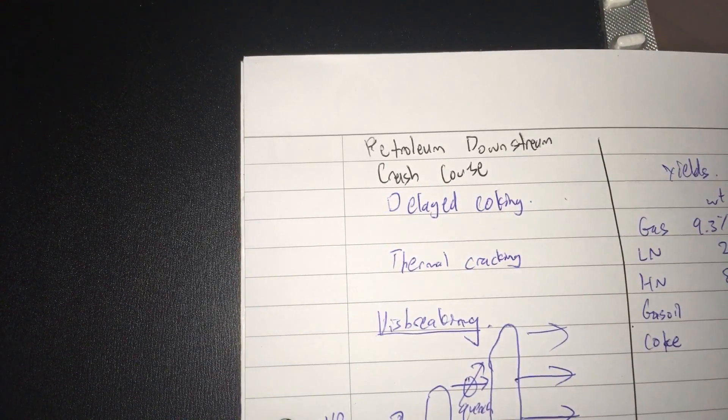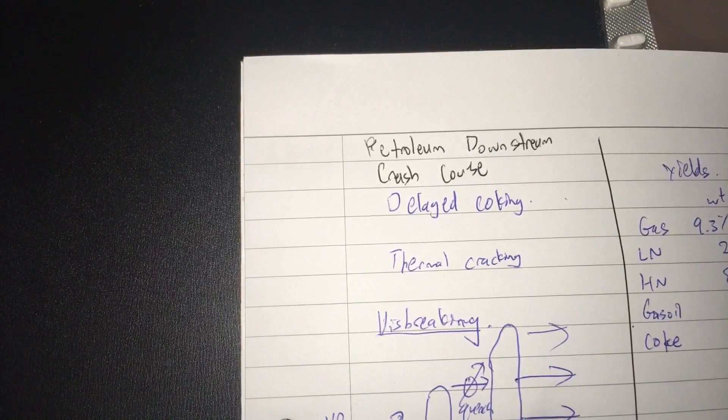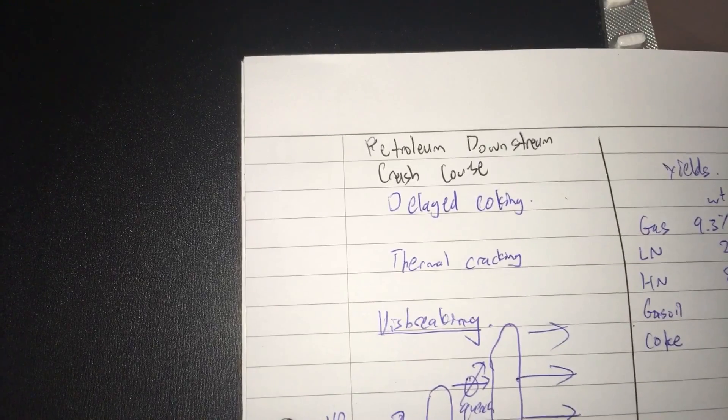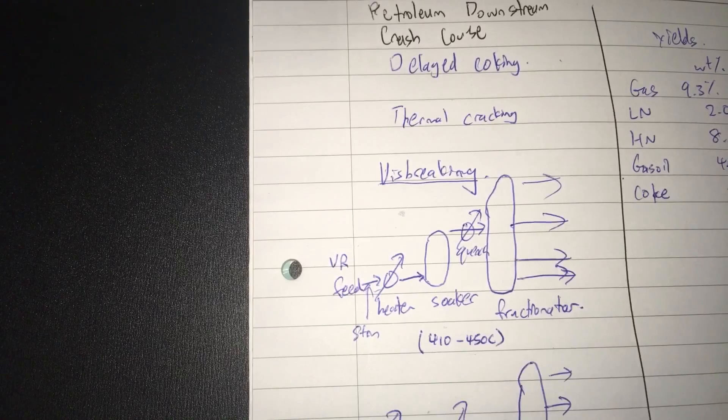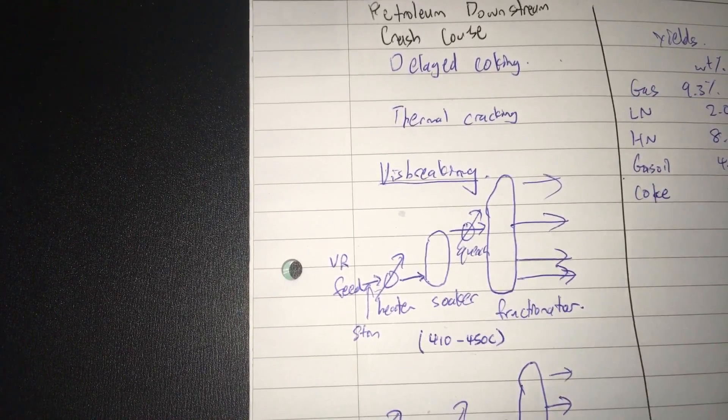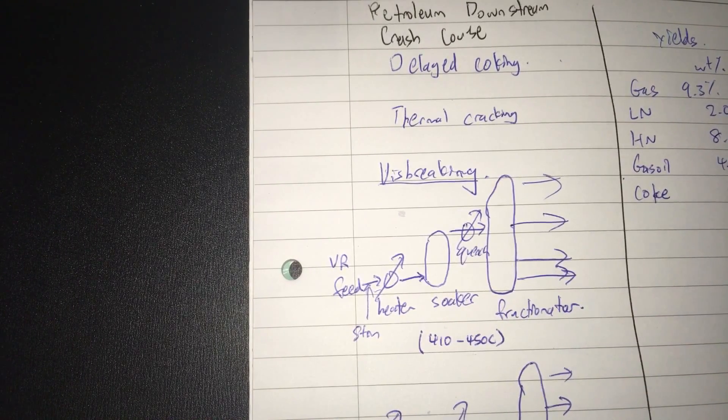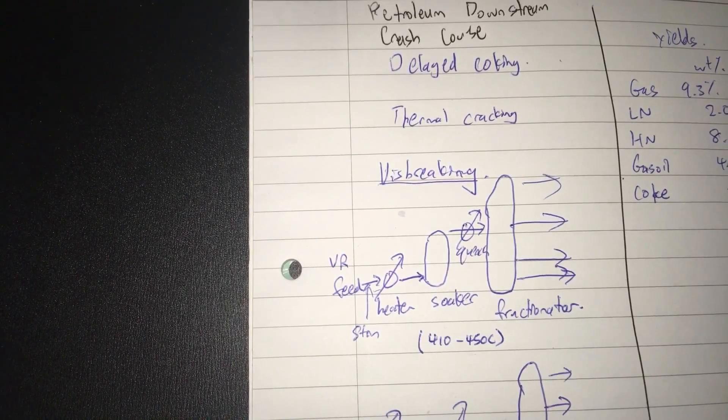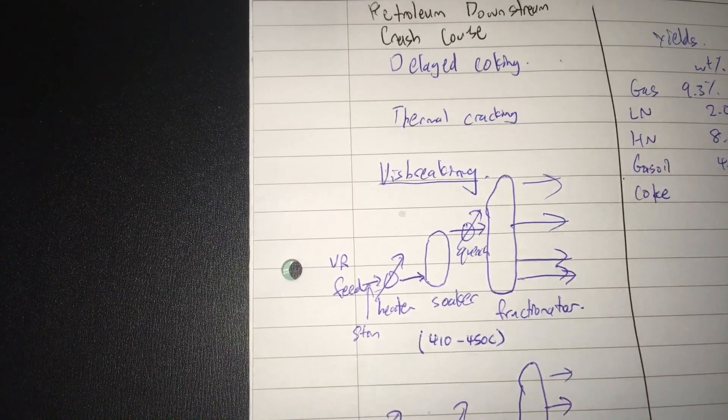Delayed coking, what is it? It is a kind of thermal cracking process. We have discussed thermal cracking processes before if you have watched my previous videos on visbreaking. Just to recap, visbreaking is to reduce the viscosity of a vacuum residue or atmospheric residue via subjecting it to a limited amount of heat so that less gas oil or kerosene or those valuable oils are needed to dilute the vacuum residue to make it acceptable for use in ship fuel.